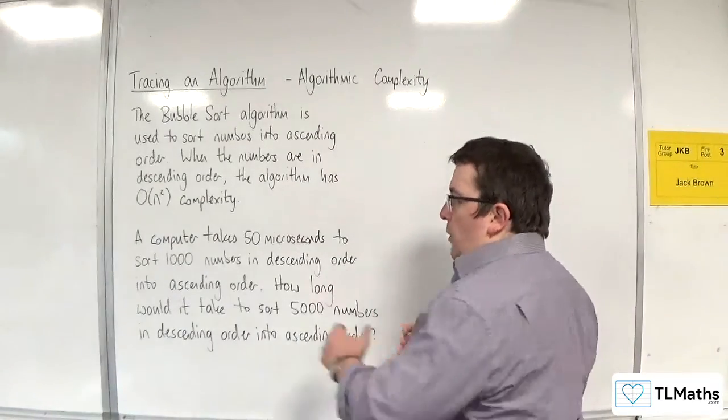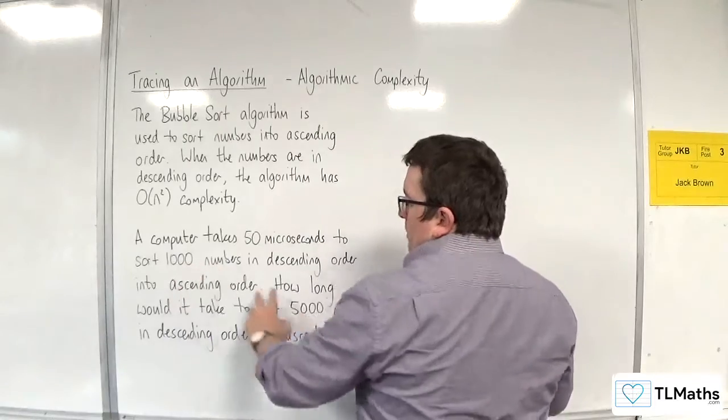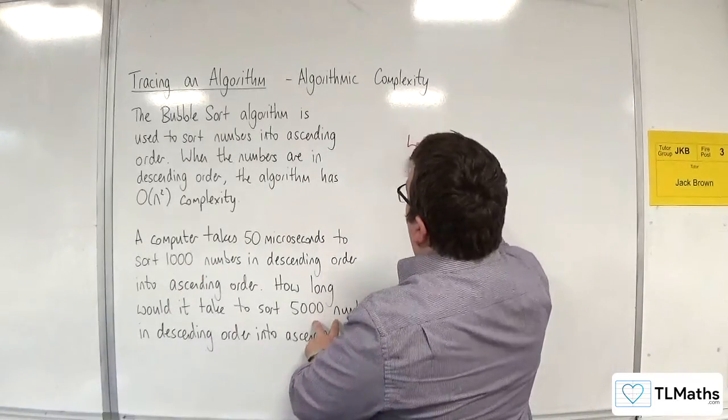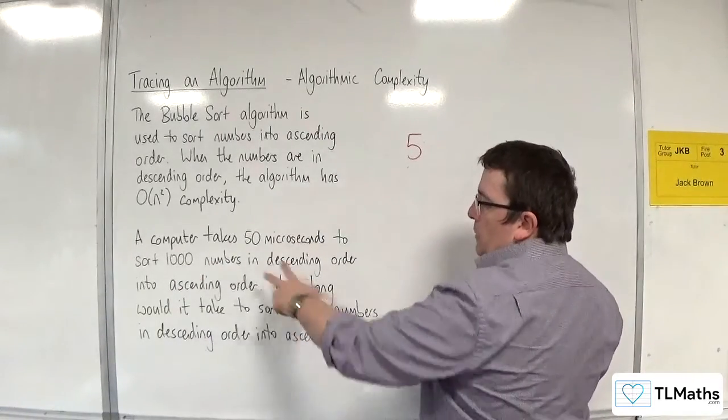So we've gone from 1,000 numbers in the original problem to 5,000 numbers. So the factor is 5, because we've multiplied by 5.